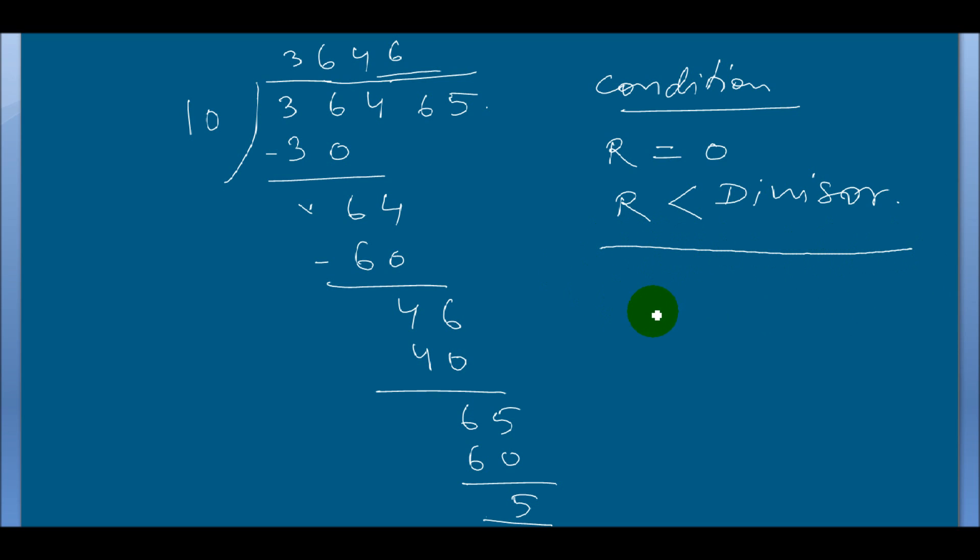Now in shortcut way what I taught you earlier. Here 36465 divided by 10. Here is 10. Then this 1 digit from right is remainder and rest all is quotient. 36465, 5 is remainder. This all is quotient. Again I am erasing this one because it is not clear. Here again I am writing this one. 36465 divided by 10. So here is 10. So this remainder, extreme rightmost, is the remainder and rest one is quotient. You notice this, here 3646 is quotient and 5 is remainder.